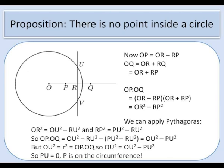We can now use Pythagoras. OR is one side of the right-angled triangle ORU so OR² = OU² - RU² and similarly PR is one side of the right-angled triangle PRU so RP² = PU² - RU². So OP × OQ = OR² - RP² and substituting these we get OU² - PU², but OP × OQ was r² and OU² is also r² so we've shown that OU² = OU² - PU² and so PU has to be zero which means that P must be on the circumference of the circle.